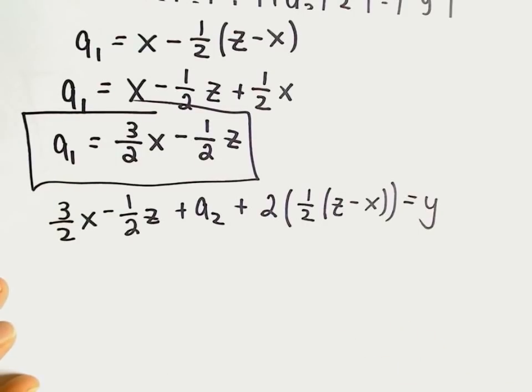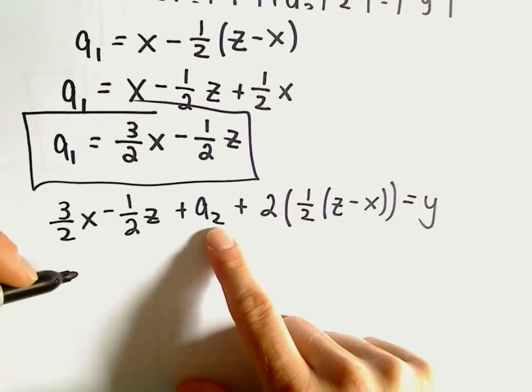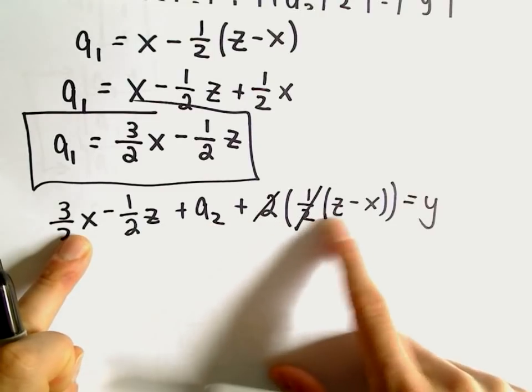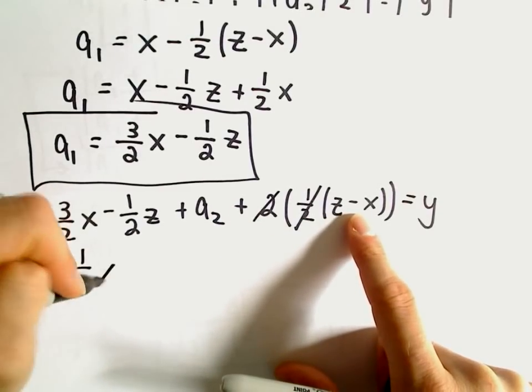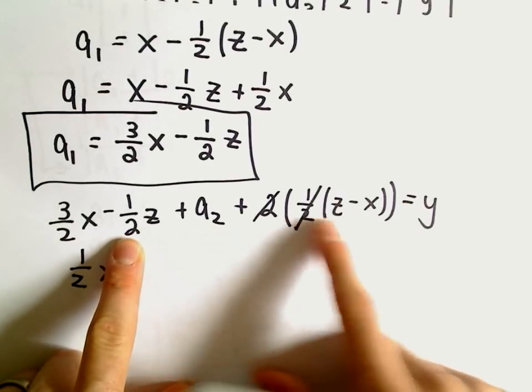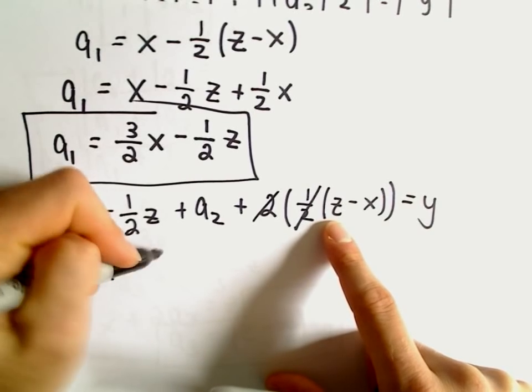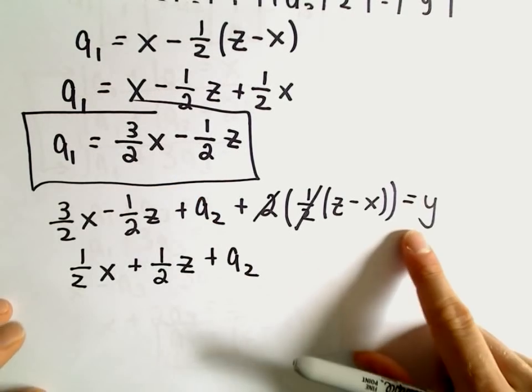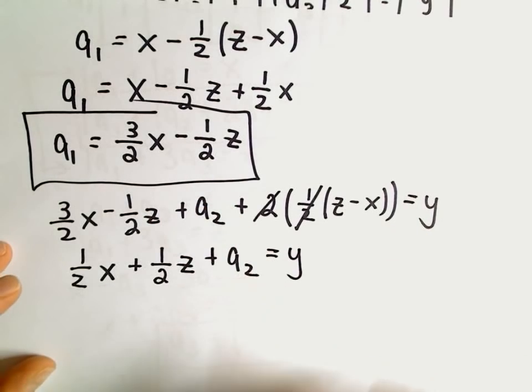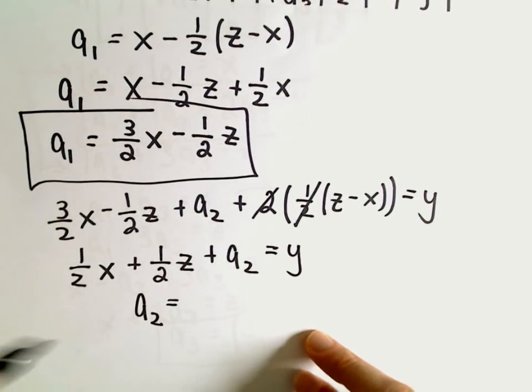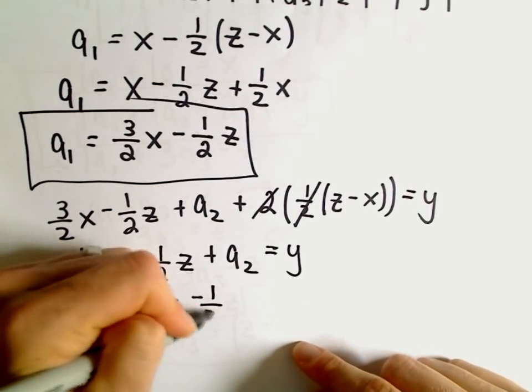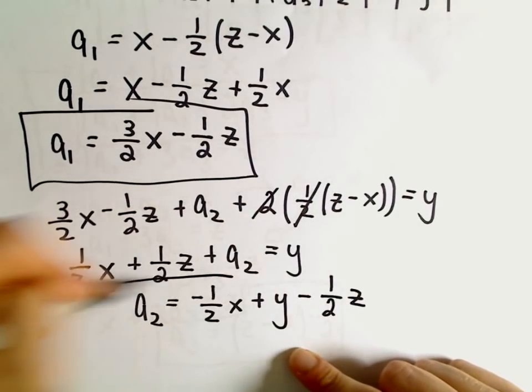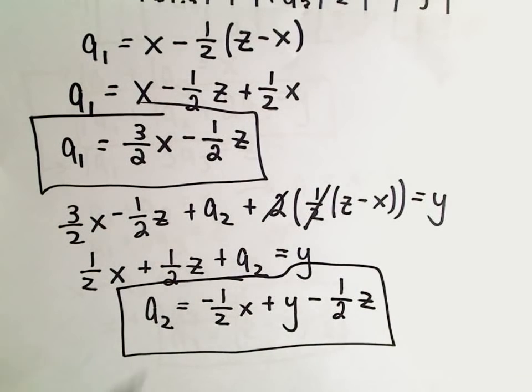And again, now it's just the same thing as before. We're going to combine like terms and then solve for a sub 2. Well, let's see, the 2 and the half would cancel, I guess. We have 3 halves x, it looks like we would have minus an x. So that would leave us with one half x. It looks like we have negative one half z plus 1z. So it looks like a positive one half z to me. We still have our plus a sub 2 hanging out. And then that's equal to y. And again, now we can just simply solve for a sub 2. It says a sub 2 would be, if we subtract negative one half x plus y minus one half z. And again, now we have, we've solved for a sub 2 as well.